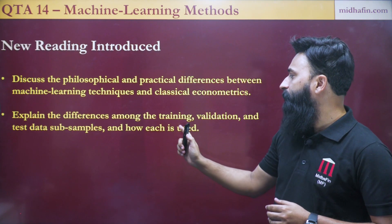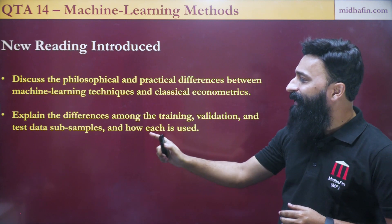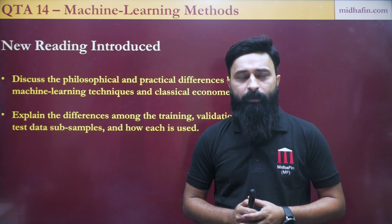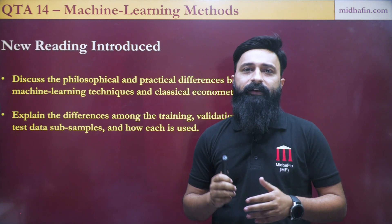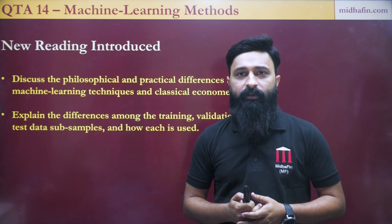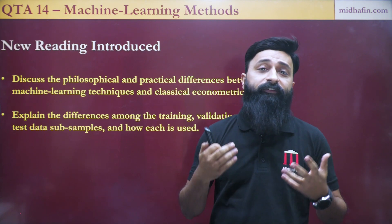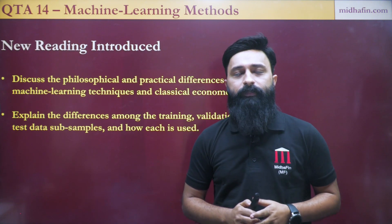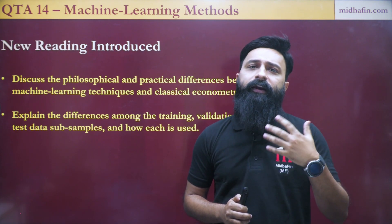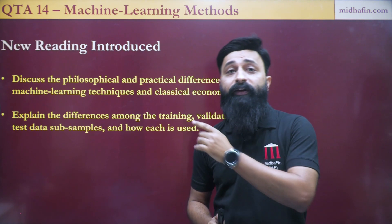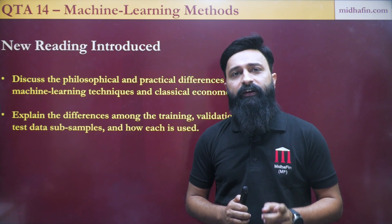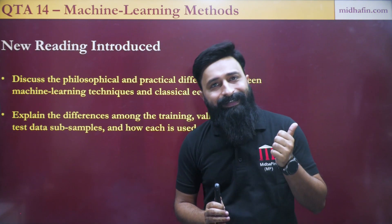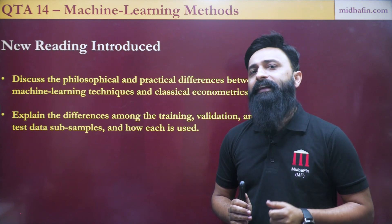The second learning objective covers the differences among training set, validation set and test set. In conventional econometrics, a part of the data sample is retained to test the fitted model, so you can see how well it predicts observations not yet seen. The sample was divided into two parts: in-sample and out-of-sample. In machine learning, the use of a hold-out sample is even more important, but the overall sample is usually divided into three parts: training set, validation set and test set.